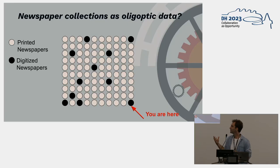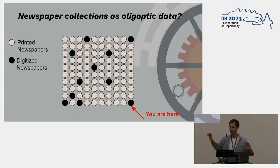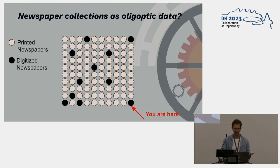The oligoptic sense contrasts with panoptic. Panoptic is the all-encompassing view, but he argues that big data is oligoptic — it gives you a specific perspective on the past. But how can you actually articulate or detail this perspective? What perspective does historical newspaper data actually give us?